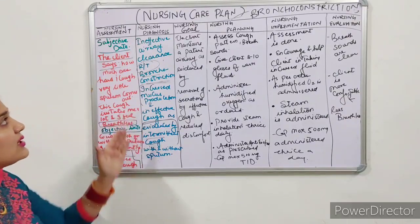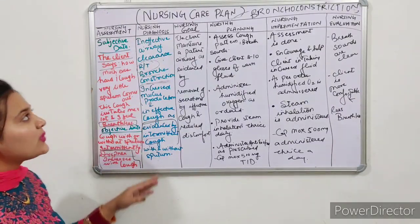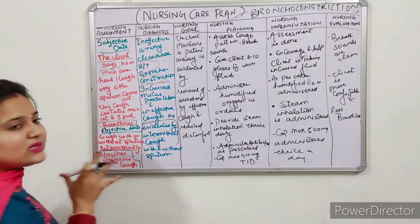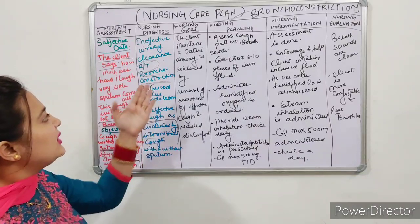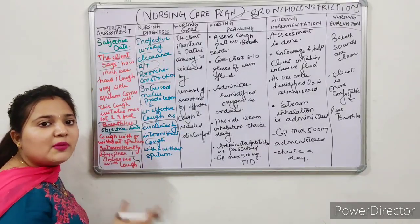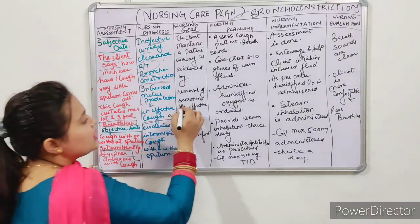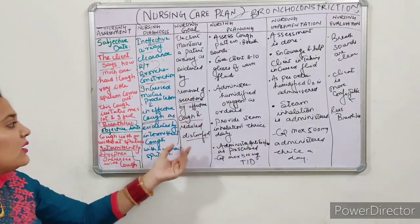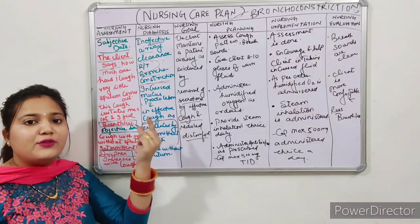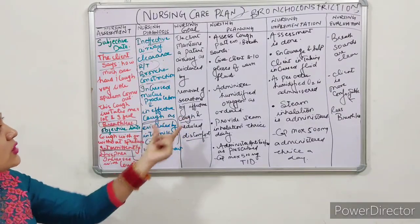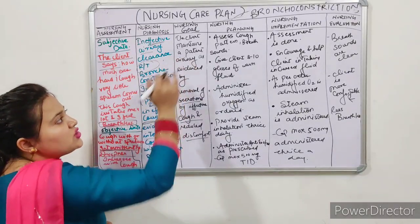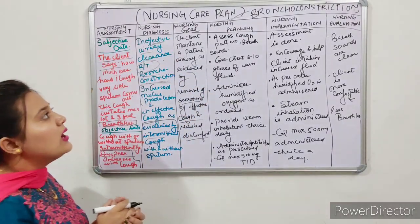Nursing Goal: The client maintains a patent airway — so the airway, which is currently ineffective, becomes patent — as evidence by removal of secretions by effective cough and reduced discomfort. If the patient's discomfort reduces and the cough becomes effective — secretions clear — then the airway will become patent. That is what we need to achieve. I hope goal is clear. Next is Planning.